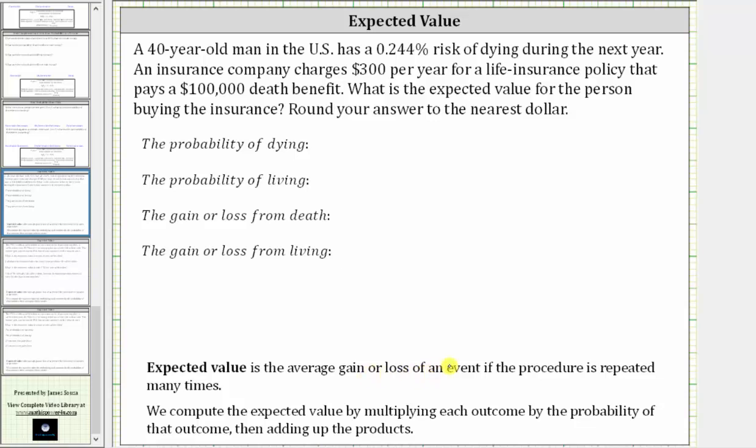The expected value is the average gain or loss of an event if the procedure was repeated many times. We compute the expected value by multiplying each outcome by the probability of that outcome, then adding up the products.